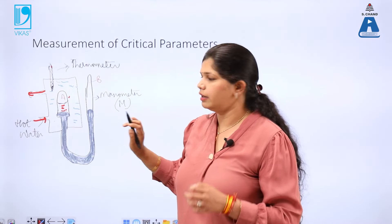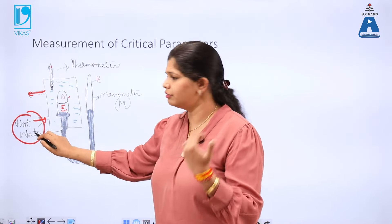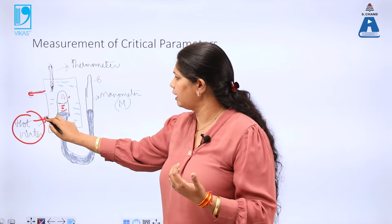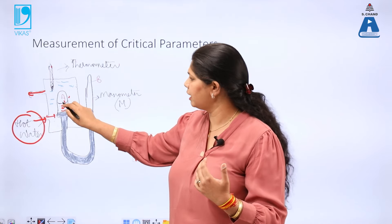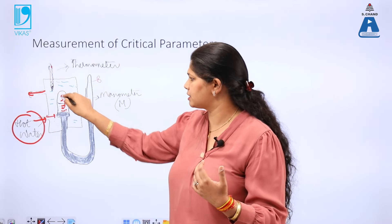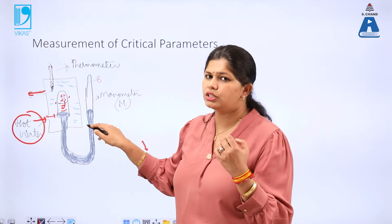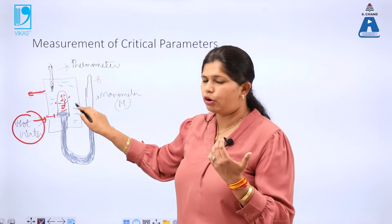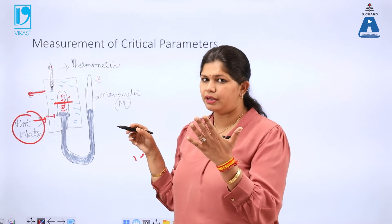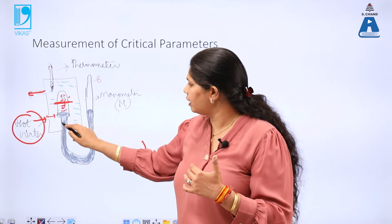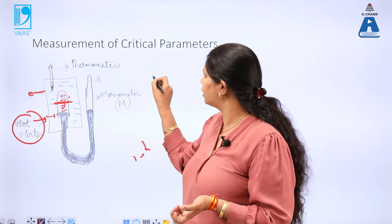In this particular experiment, what was done is the temperature of the system was raised by flowing water. As the temperature of the system increases, the liquid will start going into the vapor state and vapors will start coming into existence. At one point, because there is no change in volume — the volume is fixed — the boundary between liquid and vapor will disappear. The pressure at which this takes place is called critical pressure.